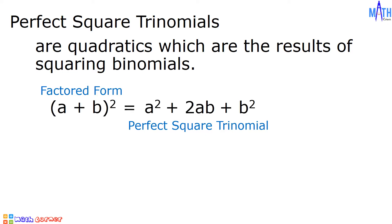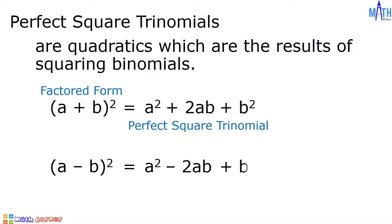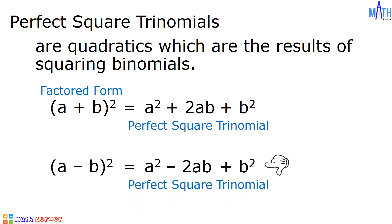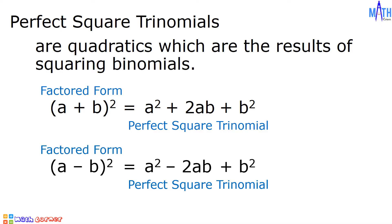Next, we have the square of a minus b. It is equal to a squared minus 2ab plus b squared. This is a perfect square trinomial and this is the factored form.